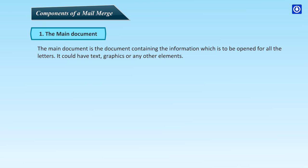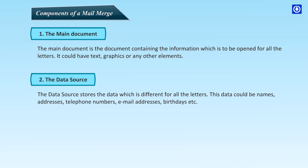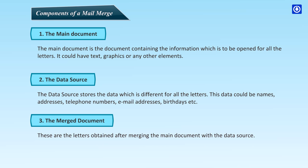First, the main document — the document containing information which is to be common for all the letters. It could have text, graphics, or any other elements. The data source stores the data which is different for all the letters; this data could be names, addresses, telephone numbers, email addresses, birthdays, etc. The merged document contains the letters obtained after merging the main document with the data source.